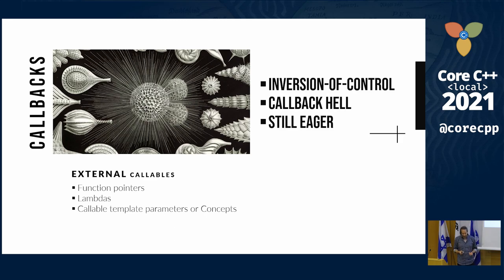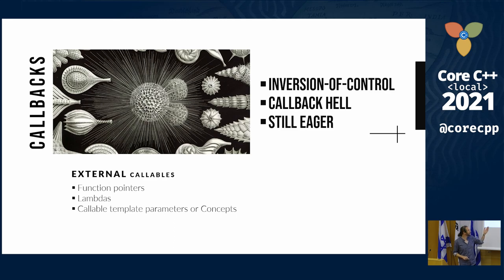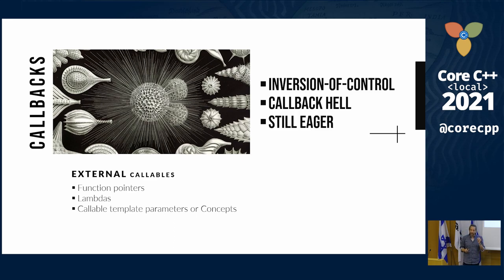One common mitigation is callbacks. C++ has a whole bunch of callback mechanisms: we have function pointers, which go back to the C days; we have lambdas themselves; and we have callable template parameters. We can use concepts and generally pass generalized callbacks. But even these solutions, when we're talking about callbacks, they have their own drawbacks.